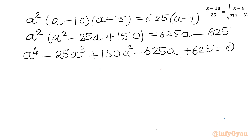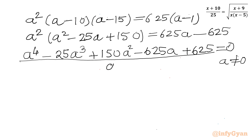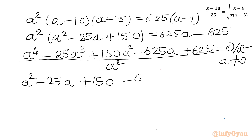Since a cannot equal 0, I can divide both sides by a². So we get: a² minus 25a + 150 minus 625/a + 625/a² equals 0.